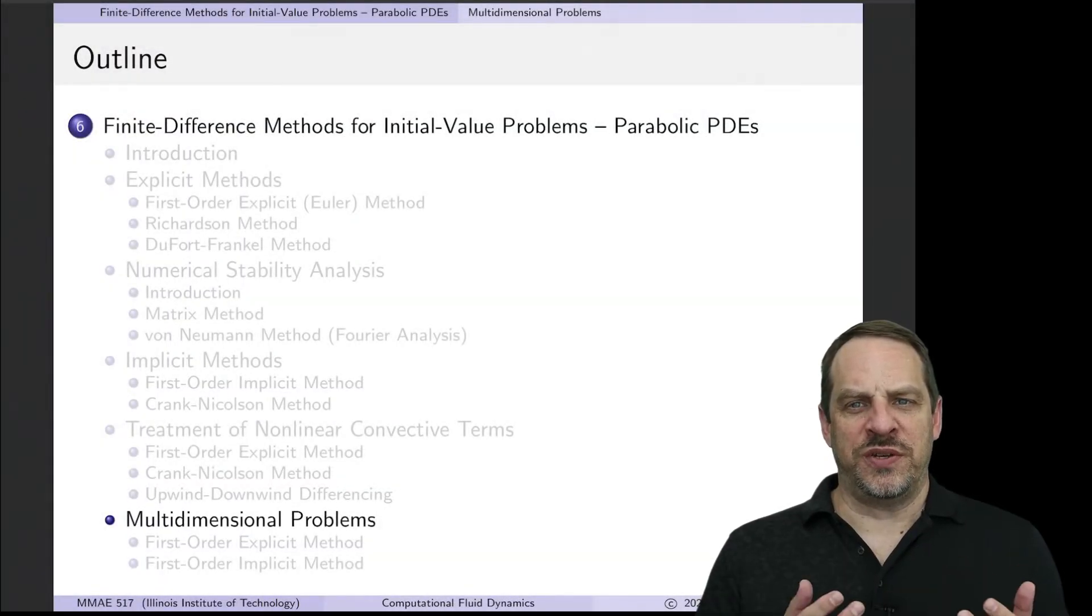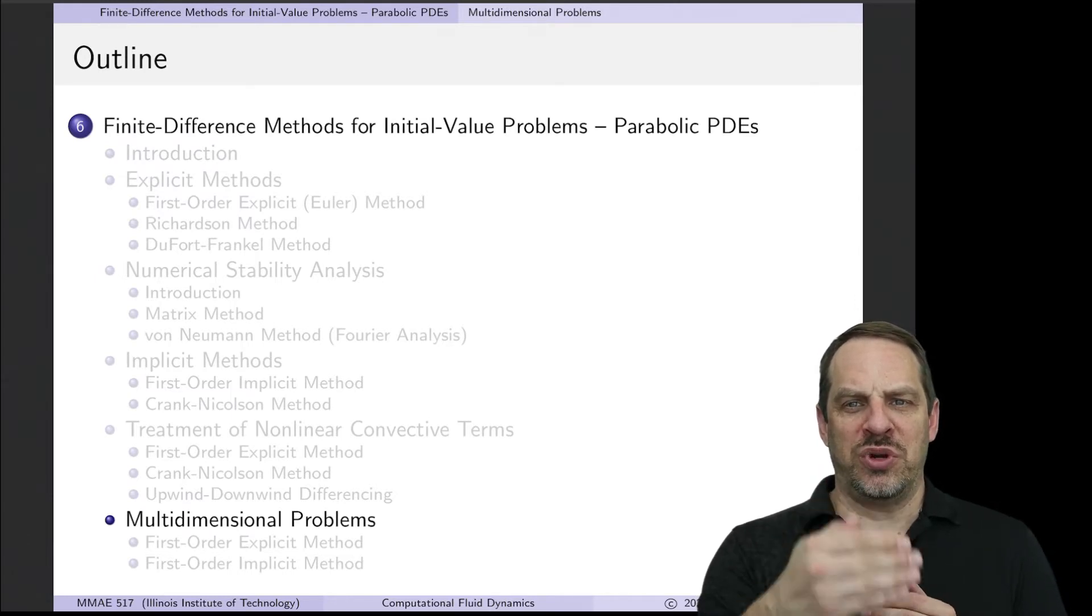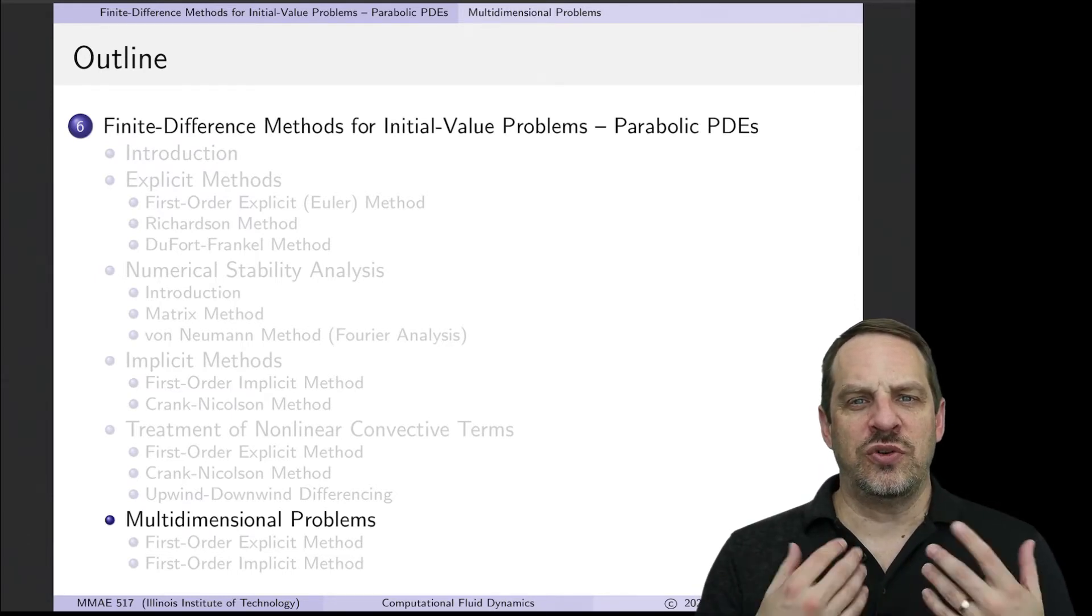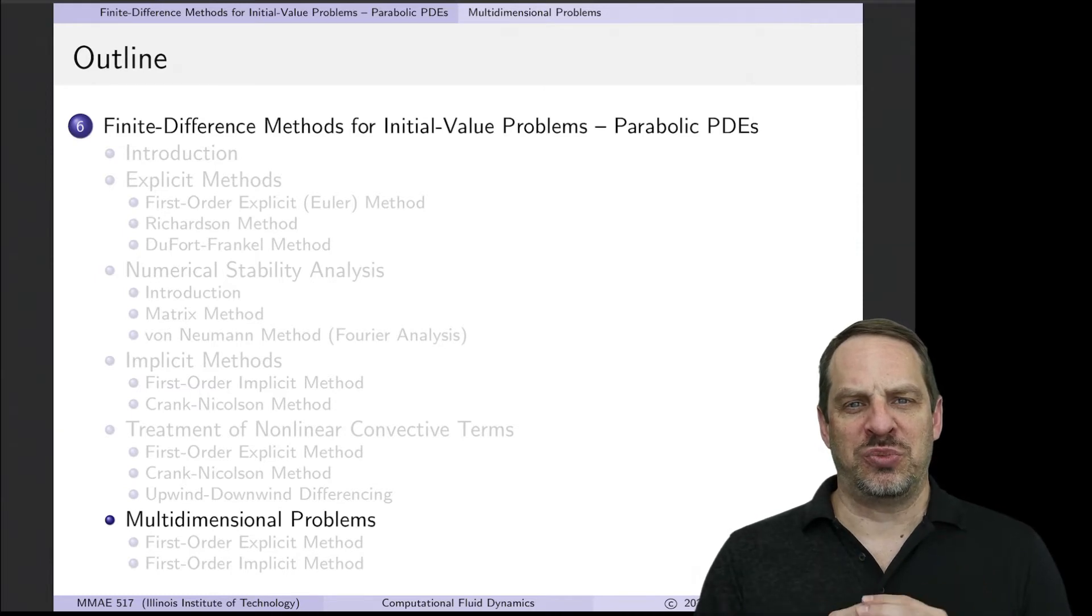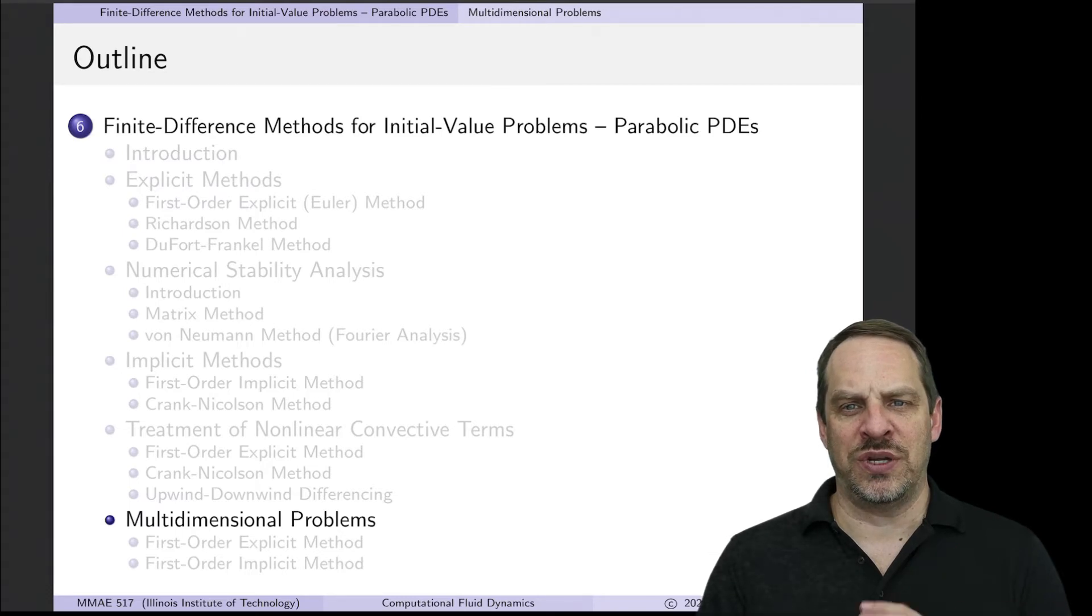We've been talking in this chapter about finite difference methods applied to parabolic partial differential equations, where the solution marches forward in time. So far we've been looking at spatially one-dimensional problems in order to look at various aspects of explicit methods, implicit methods, numerical stability analysis, and so on. But now we need to look at multidimensional problems.